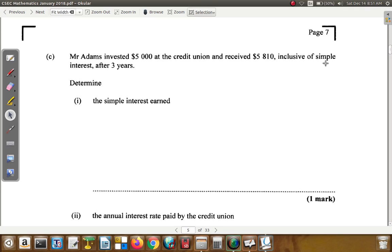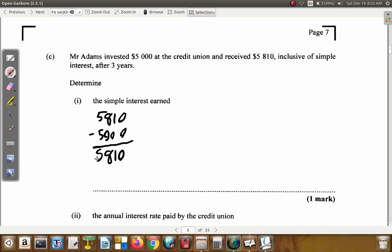If he invested $5,000 and got back $5,810, when you subtract them what you have is $810. So the simple interest is $810.